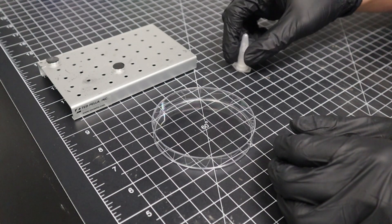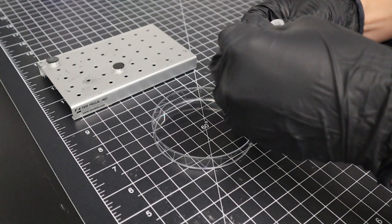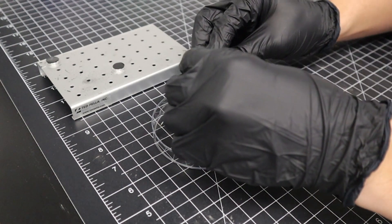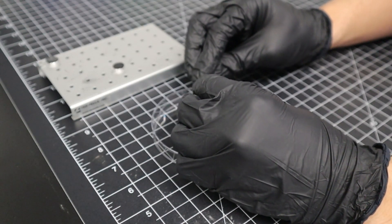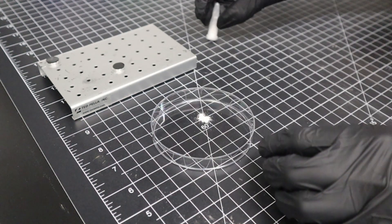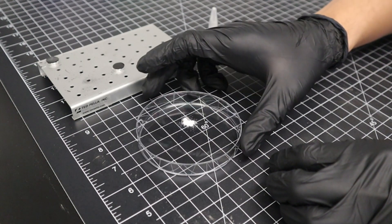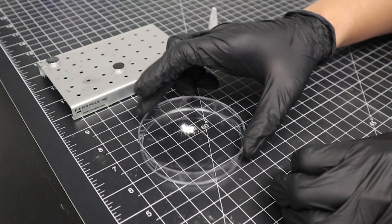We start by emptying some of our powder sample into a petri dish. We can then spread this powder out by gently shaking the dish back and forth or by using a spatula.